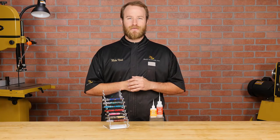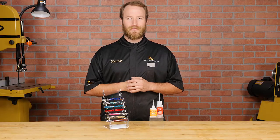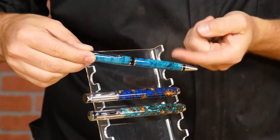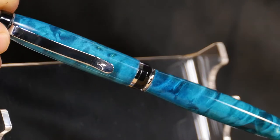CA is short for cyanoacrylate, which is the chemical name for super glue. A CA finish is made by building up a lot of really thin layers of super glue on your pen, then polishing them to a high gloss.